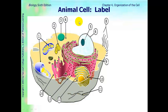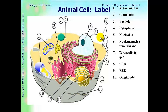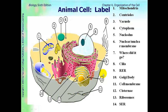Now we'll label the animal cell. Here are the answers: one is mitochondria, two is centrioles, three is vacuole, four is cytoplasm, five is nucleolus, six is nuclear membrane, eight is cilia, nine is rough ER, ten is Golgi body, eleven is cell membrane, twelve is cisternae — which are the foldings within the Golgi body — thirteen are ribosomes, and fourteen is smooth ER.